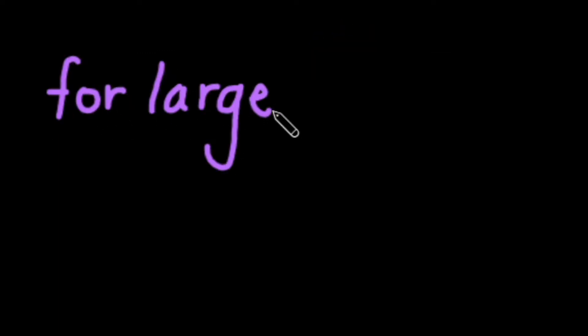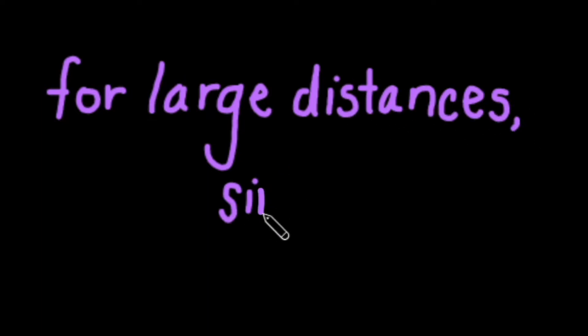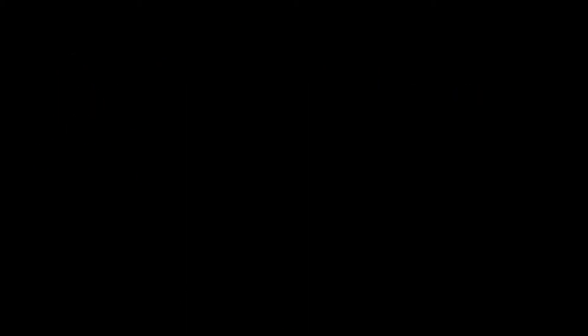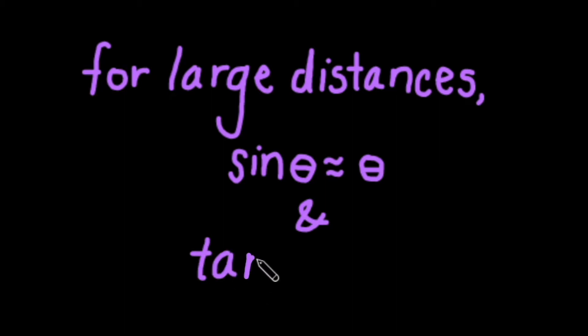For large distances, like the distance to a star, the sine of an angle is approximately equal to the angle itself. Thus, we simply say the distance to the star is equal to 1AU over the parallax angle. If you instead calculated the distance between the Sun and the star using the tangent of the angle, you'd get approximately the same value.